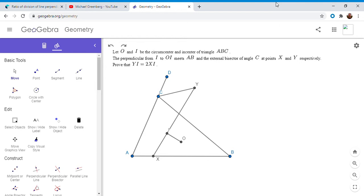So we have a triangle ABC with incenter I and circumcenter O. The line perpendicular to OI at I meets side AB at X and meets the external angle bisector of angle C at point Y. And we want to show that YI is equal to 2XI.